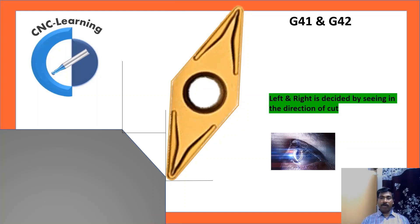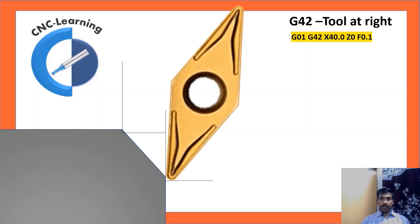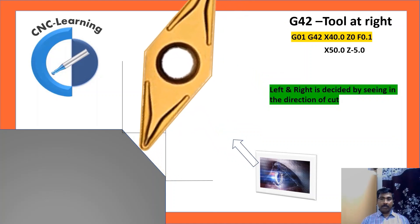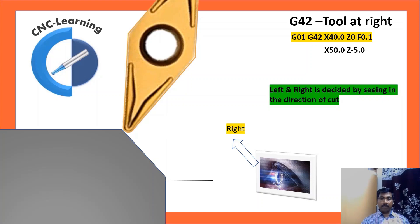Now let us see what is G41 and G42. G41 is tool at left, G42 is tool at right. G01, G42, X40, Z0, F0.1. The tool is positioned with a compensation command, that is G42. Now why it is G42 and how we can say that it is at right. Left and right is decided by seeing in the direction of cut. X50Z-5, so if you look at the direction, it is at right. That is why it is G42. Now after using G42, it is to be cancelled by G40.